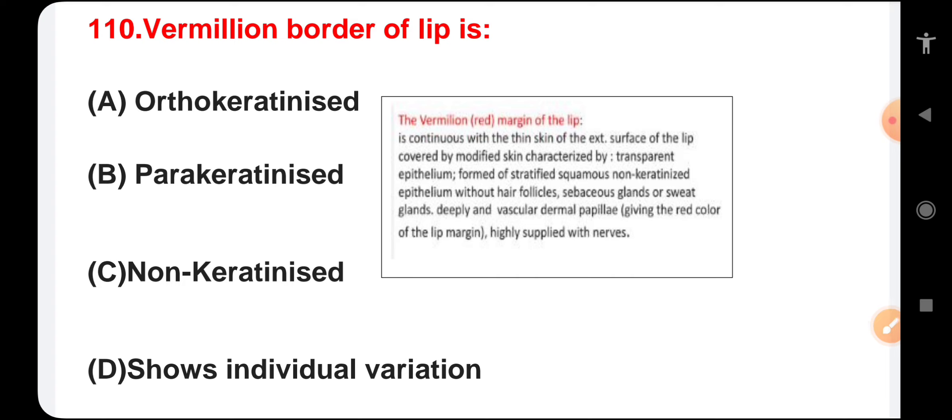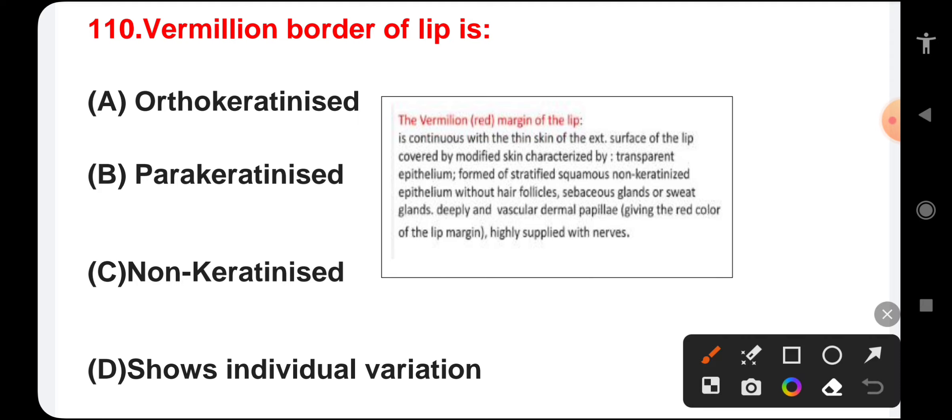Vermilion border of lip is orthokeratinized, parakeratinized, non-keratinized, or shows individual variation. Vermilion border of the lip is a continuously thin skin of the lip covered by modified skin characterized by transparent epithelium. It is made of stratified squamous non-keratinized epithelium without hair follicles, and has deeply and vascular dermal papillae highly supplied with nerves.